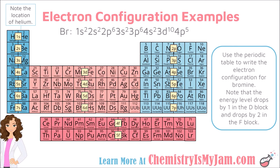In terms of the F block, it fits into the table between elements 57 and 72 and between elements 89 and 104 — that is the 6th and 7th rows down on the periodic table. The F block drops by 2 in energy level: it went from 6S to 4F and from 7S to 5F. So the energy level drops by 1 in the D block and by 2 in the F block.